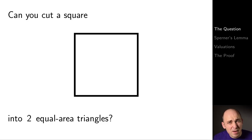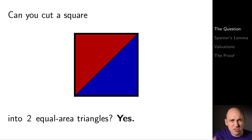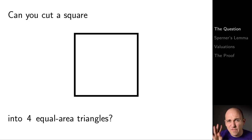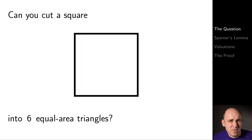Can you cut a square into equal area triangles? How about into two equal area triangles? You just slice it down the diagonal. What about into four equal area triangles? You just slice it down both diagonals.